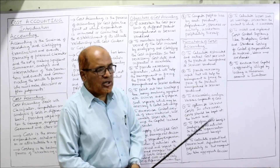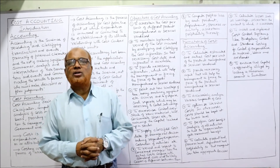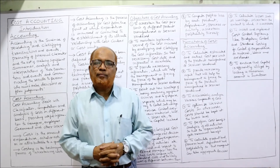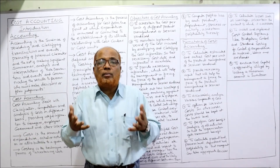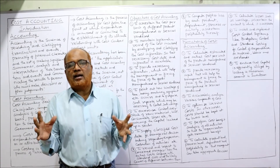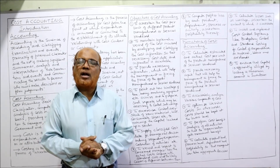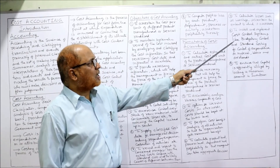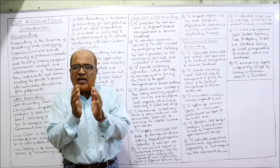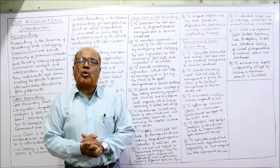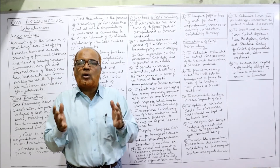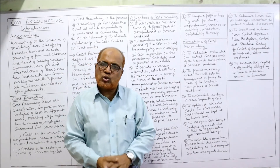Seventh, to calculate losses such as wastage to ascertain the extent to which it is available in the manufacturing process. There are normal and abnormal wastages. Normal wastage is unavoidable, but abnormal wastage is controllable. Management must take decisions to reduce abnormal wastage; without cost records, management cannot control wastages. Eighth, to install and implement cost control systems such as budgetary control and standard costing, which allow us to find out why planned activity differs from actual activity.